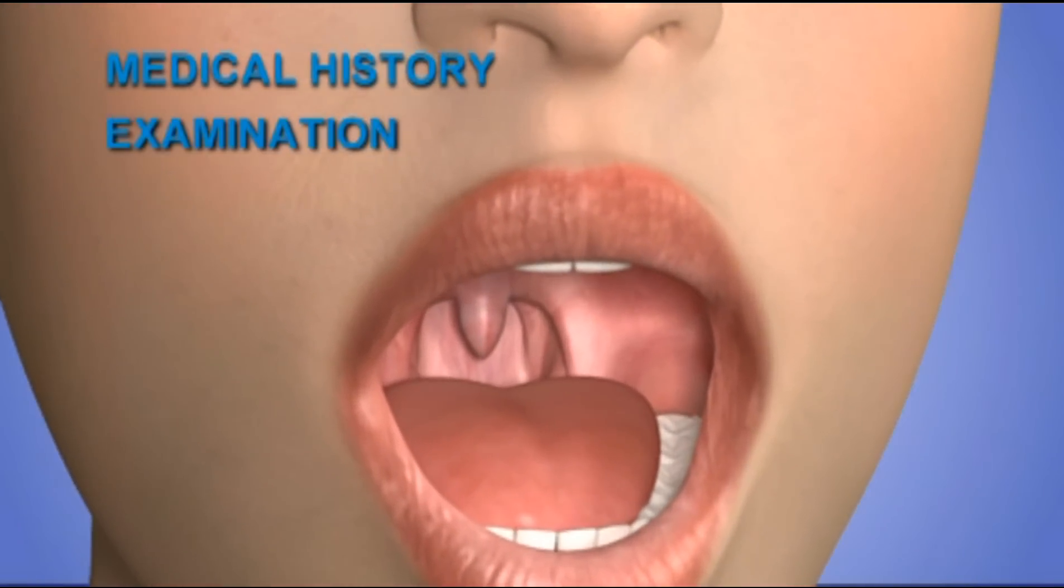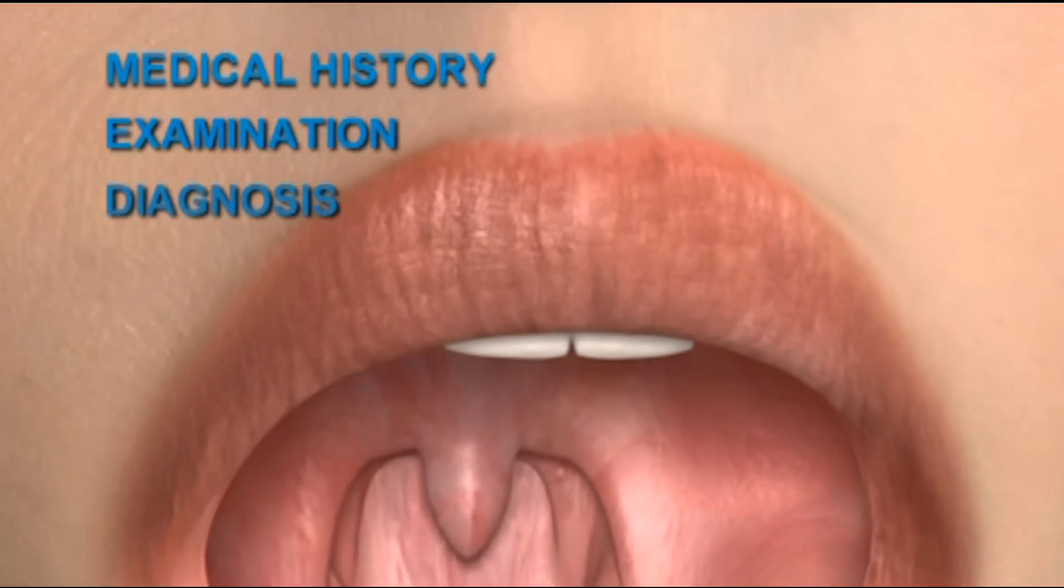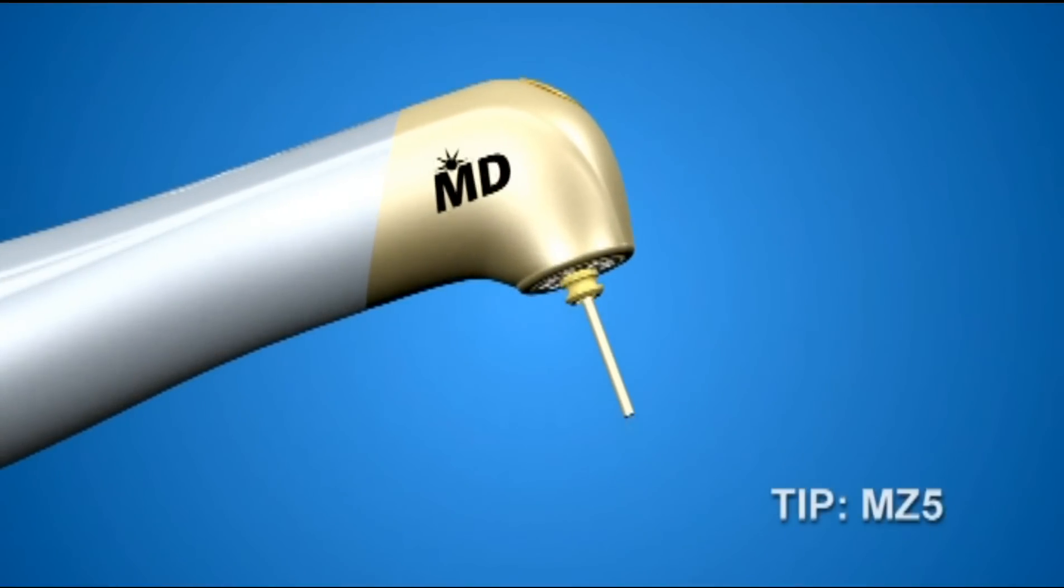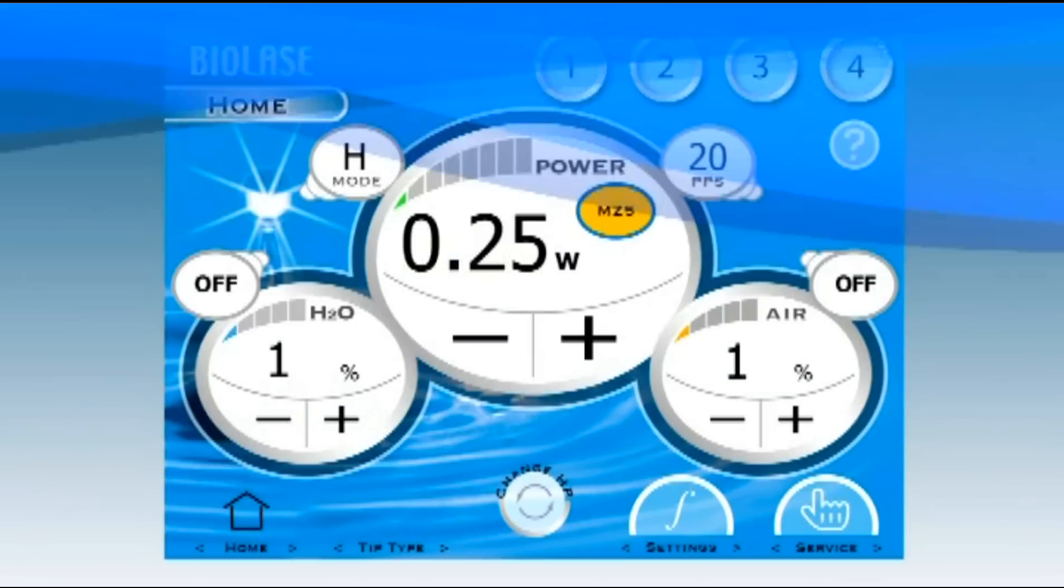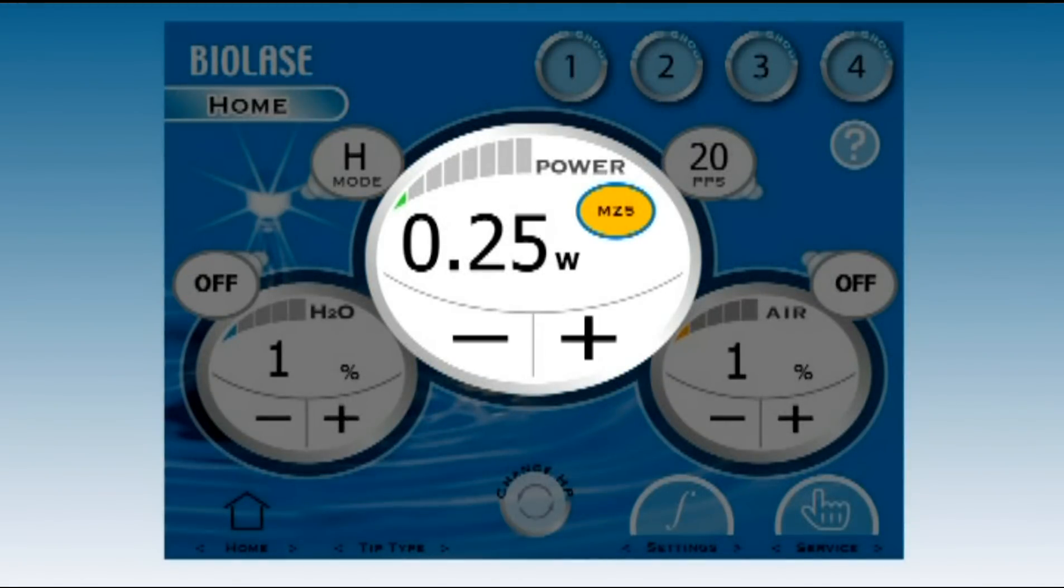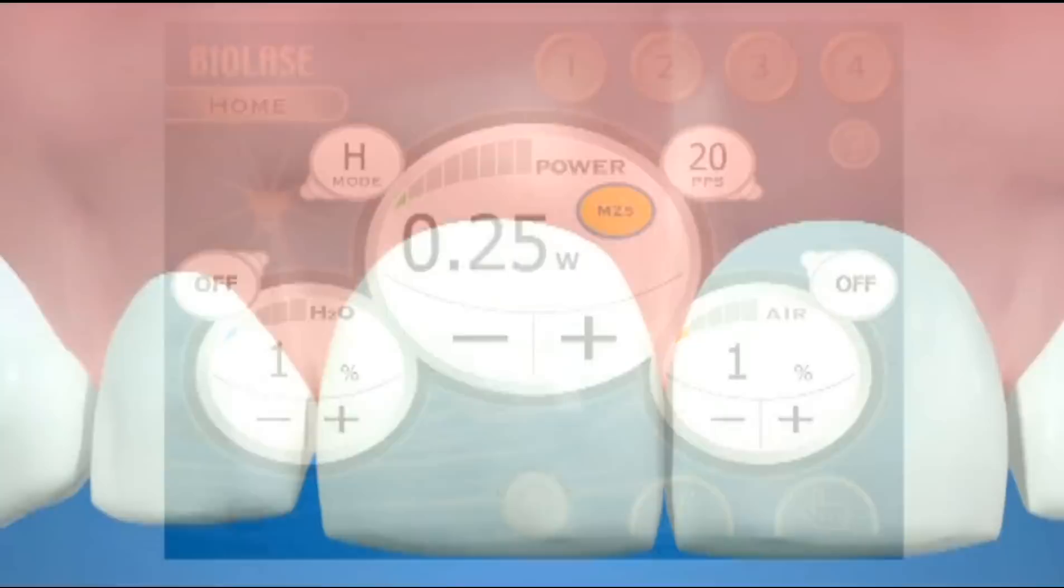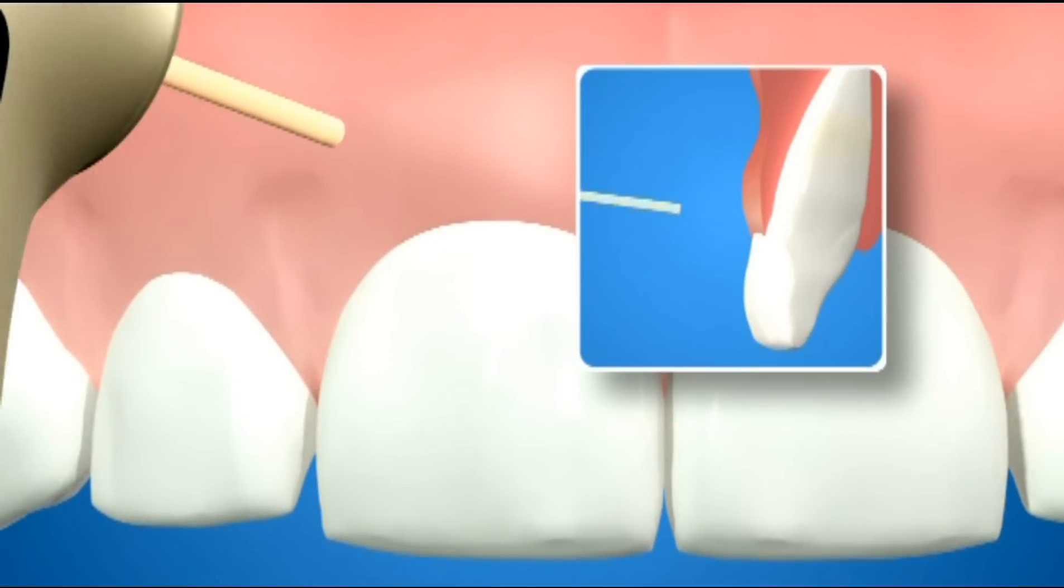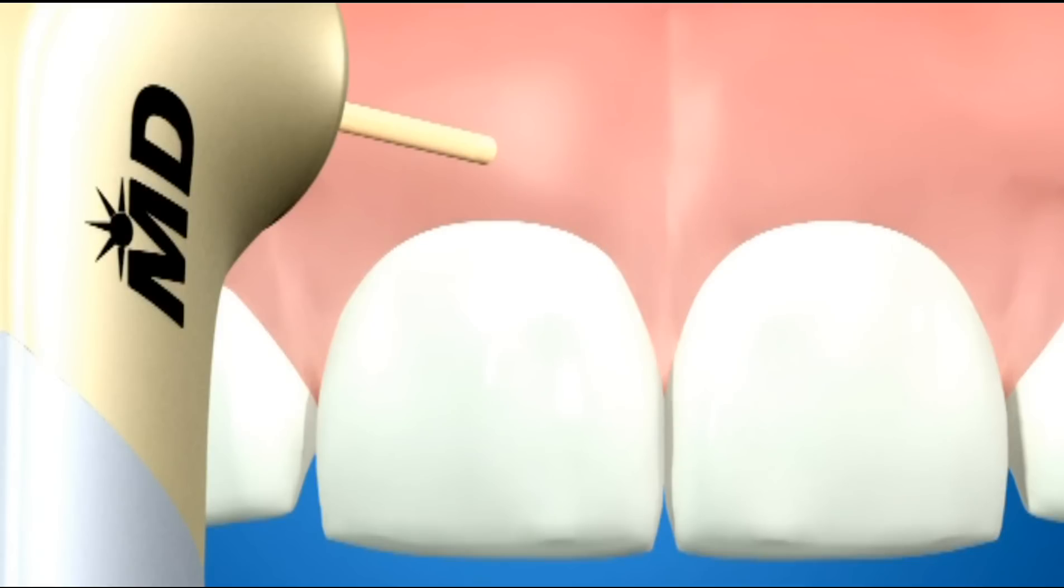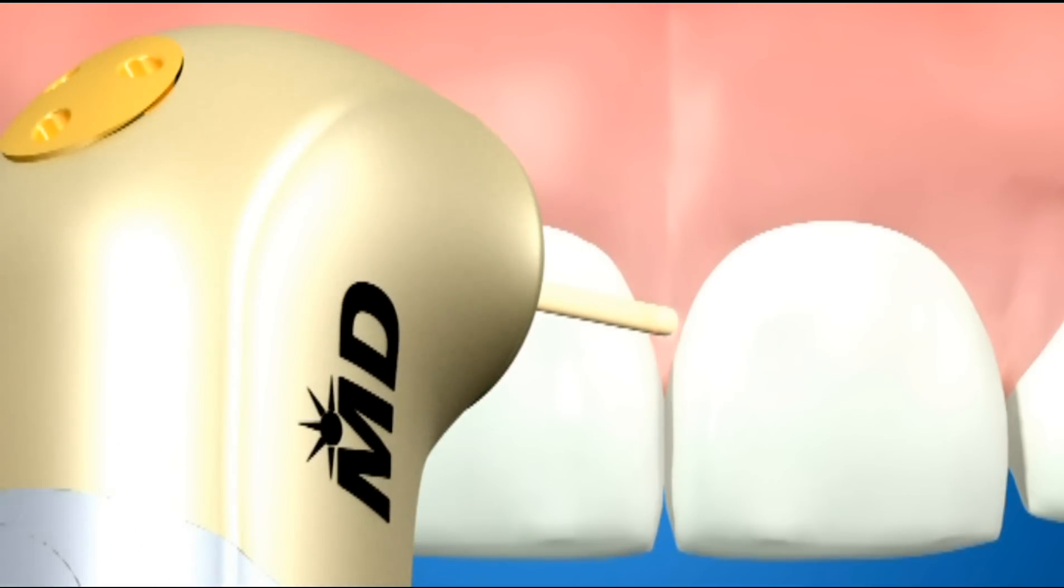After medical history, examination, and diagnosis, proceed with anesthesia. Use the Waterlase MD Gold handpiece and MZ5 tip for this procedure. Start by marking where you want to make your final incision. Set the power to 0.25 watts, frequency to 20 hertz, pulse mode to H, and both air and water to 1%. With the tip 2 to 3 millimeters from the tissue, activate the laser for just a moment to create a mark. Place one dot at midpoint and two other dots at each end of the arch.